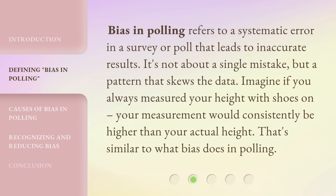Bias in polling refers to a systematic error in a survey or poll that leads to inaccurate results. It's not about a single mistake, but a pattern that skews the data. Imagine if you always measured your height with shoes on — your measurement would consistently be higher than your actual height. That's similar to what bias does in polling.